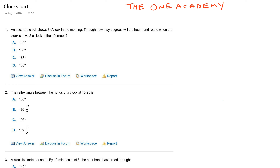Welcome to the One Academy. Today we will see some other questions about clocks. This question says an accurate clock shows eight o'clock in the morning. Then how many degrees will the hour hand rotate when the clock shows two o'clock in the afternoon?